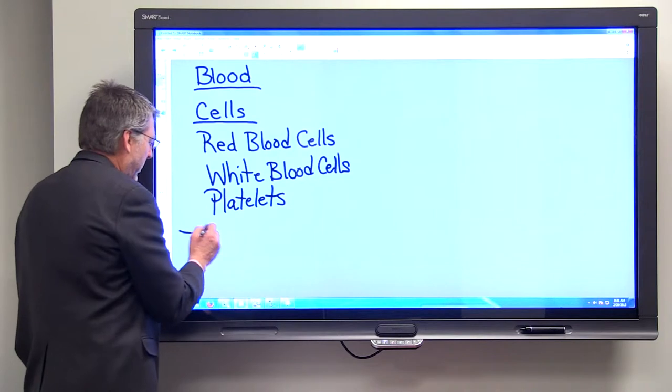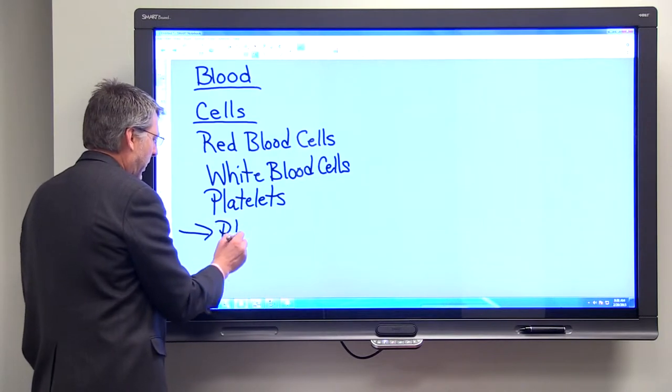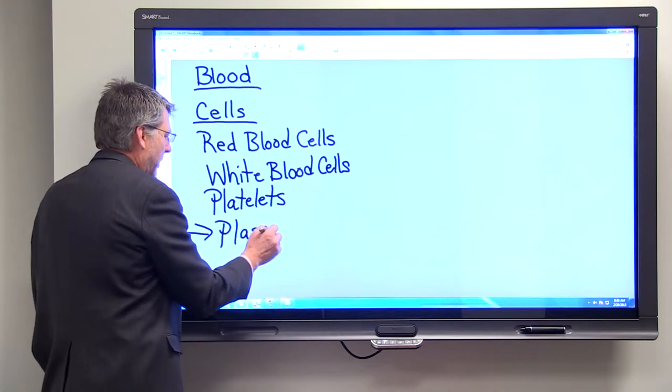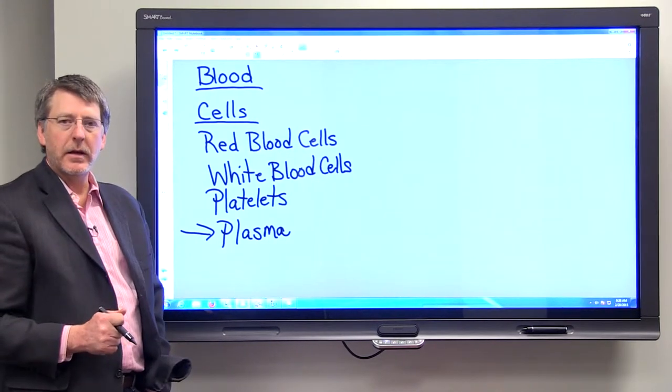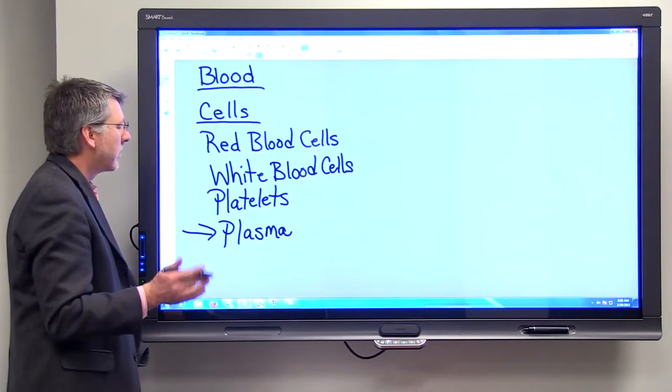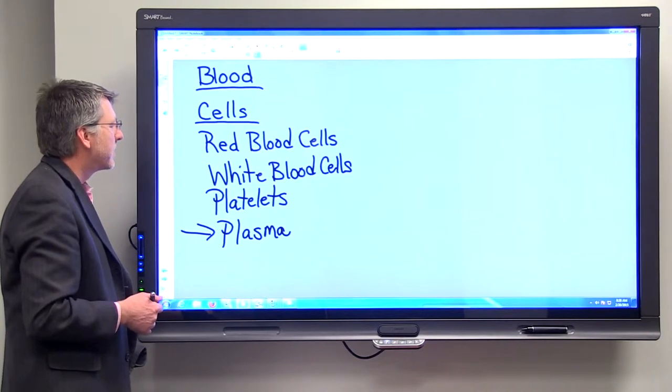So the liquid portion of the blood is called the plasma, and there are all sorts of things that are suspended in the plasma. And we'll again keep it sort of simple for now.